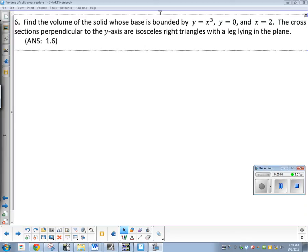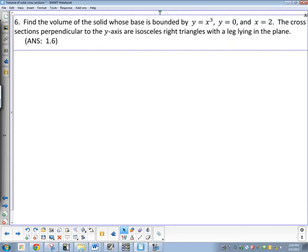Annoying problem, but you can handle it. It says find the volume of the solid whose base is bounded by those three equations, and the cross sections are perpendicular to the y-axis, and now we're dealing with an isosceles right triangle with a leg lying in the plane. So lots of different stuff going on there.